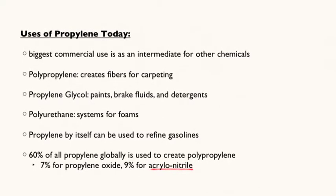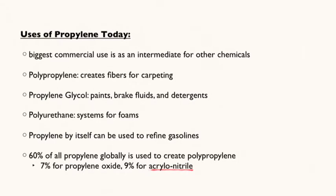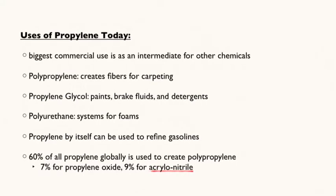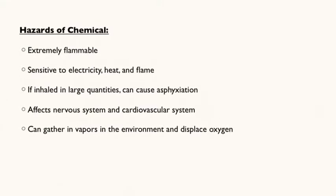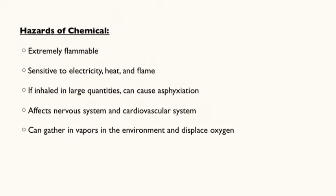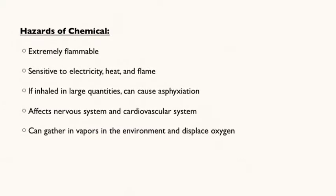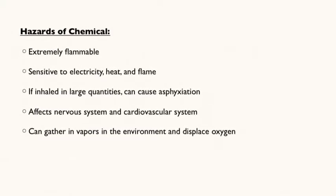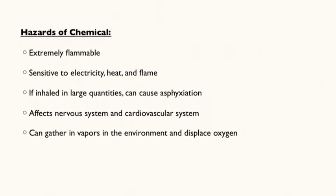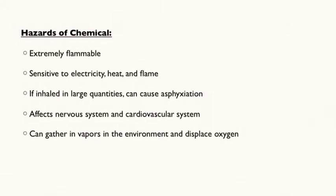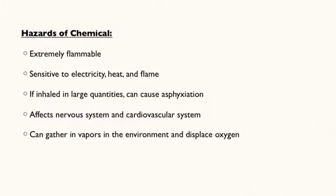Here you can see that 60% of all propylene is used to create polypropylene. Despite propylene being such a common chemical, it does have hazards if it's not contained correctly. It is extremely flammable and sensitive to electricity, heat, and flame. It also can displace oxygen and, if inhaled, it can affect the nervous system and cardiovascular system and even cause death by asphyxiation.